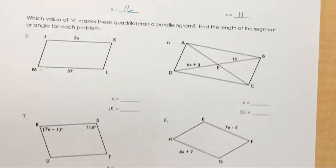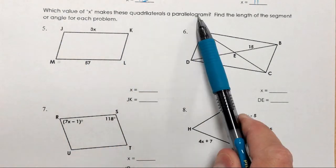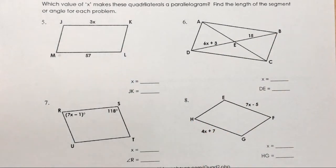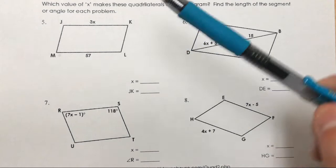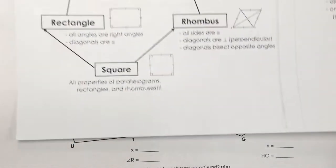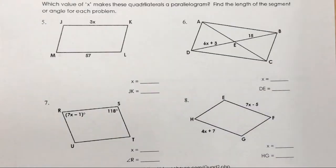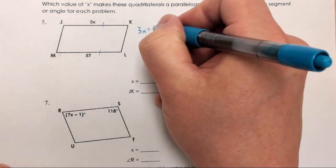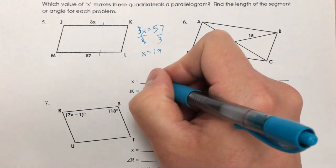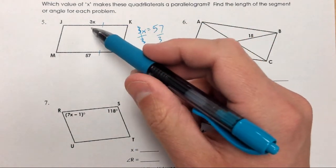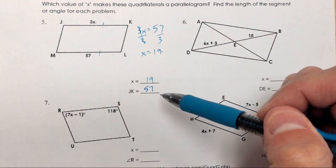Now let's move on to more challenging problems over the same concepts. For problems five through eight, the algebra gets more challenging, and we need to find the value of x and the length of a segment or angle. For number five, focusing on sides, opposite sides are congruent, so 3x equals 57. Dividing by 3 gives x equals 19. Since ML is 57, JK should also equal 57. You can verify: 3 times 19 does equal 57.